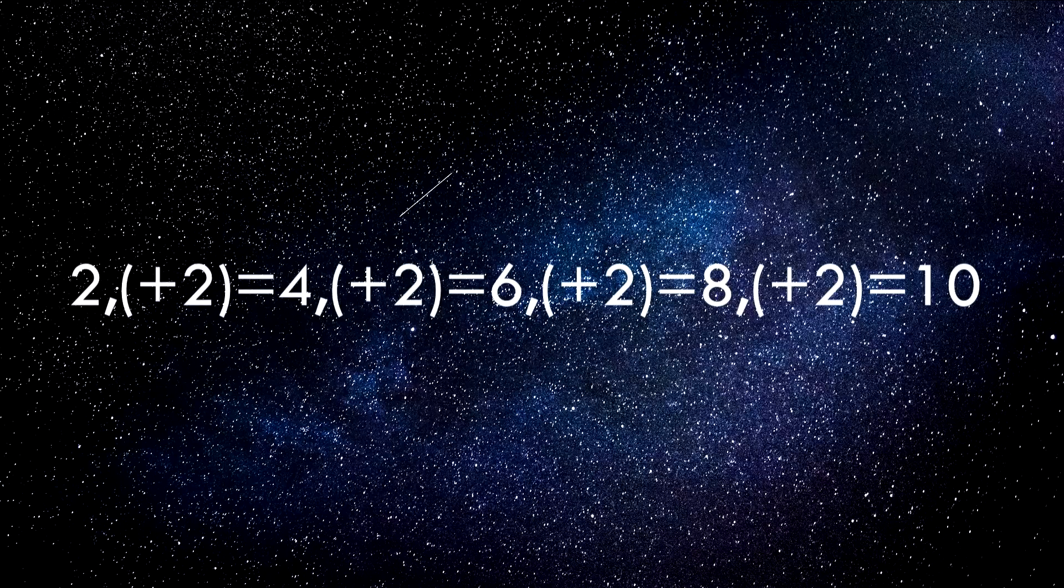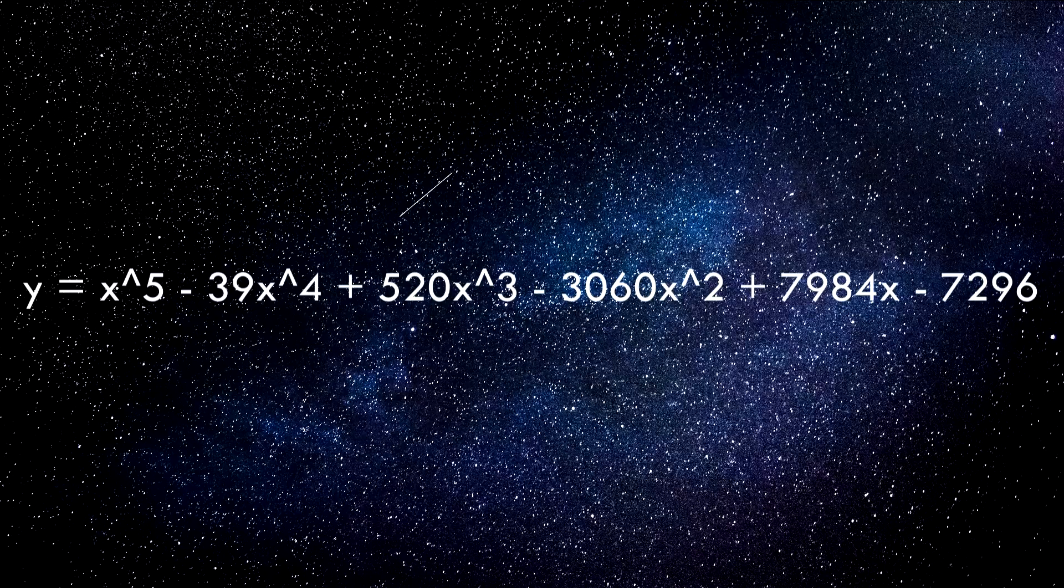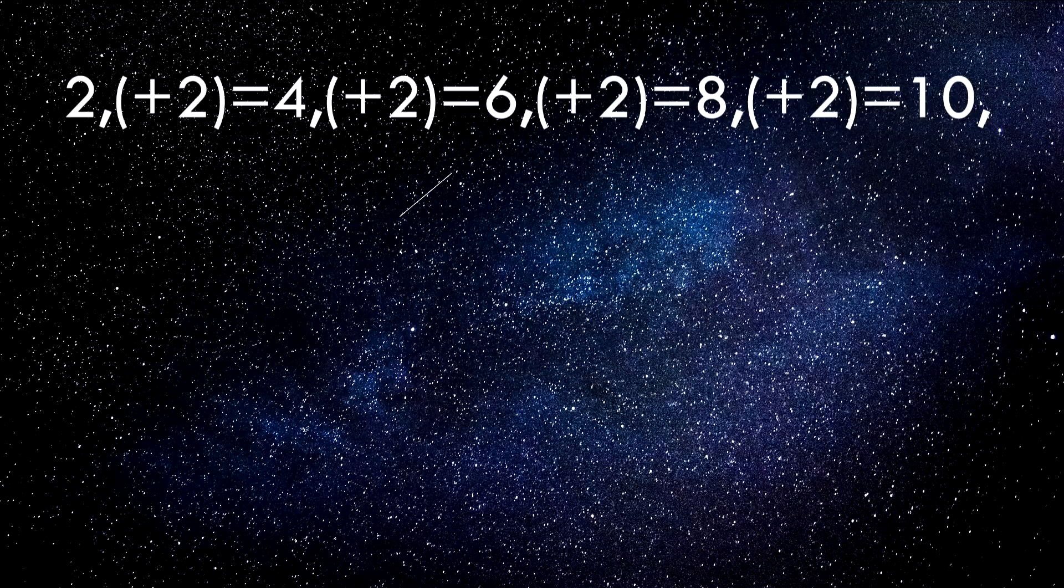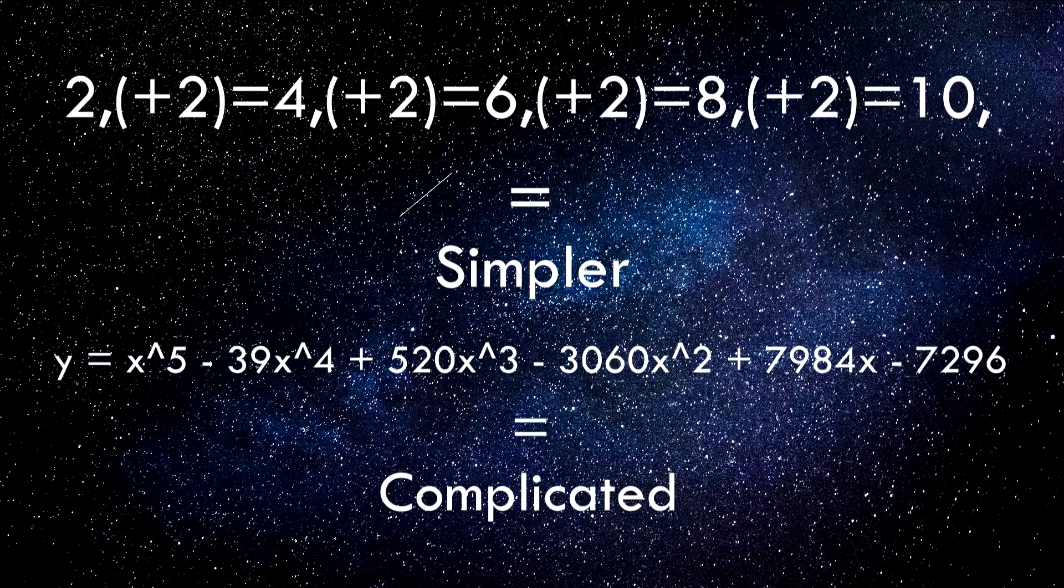But that is not the only rule that the sequence could have followed. For example, the sequence could have been defined as the roots of this polynomial equation. What allows scientists to be confident in their hypotheses, in this example that the rule was plus two every term, is that that hypothesis for the sequence is a simpler explanation than any other that could be given.